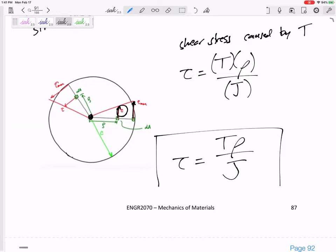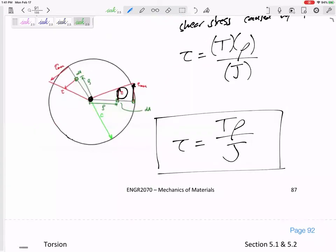The shear stress caused by torque is T rho over J. T is the internal torque, the internal moment in the axial direction. Rho is the distance away from the center, really the center of gravity, the center of the cross section.